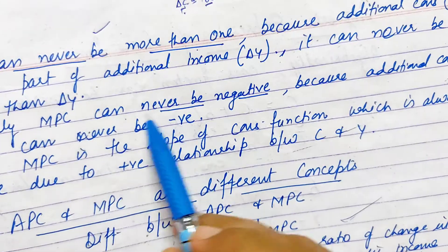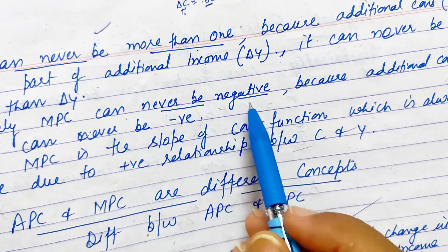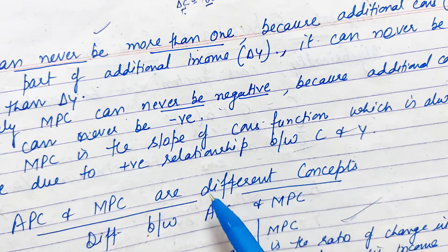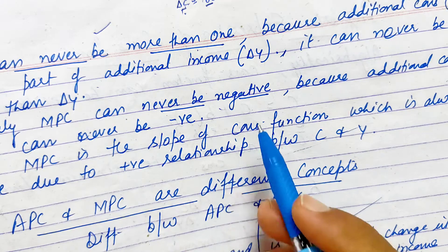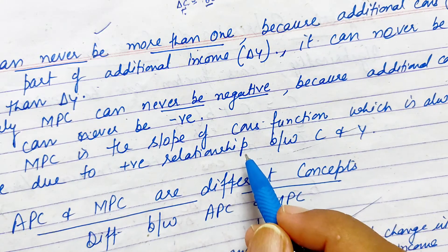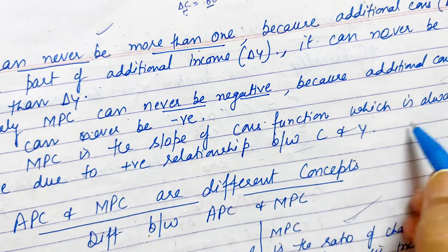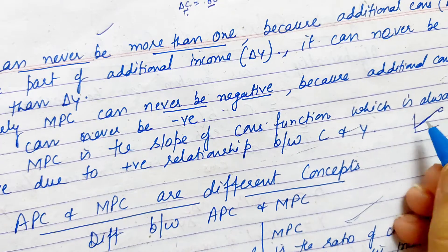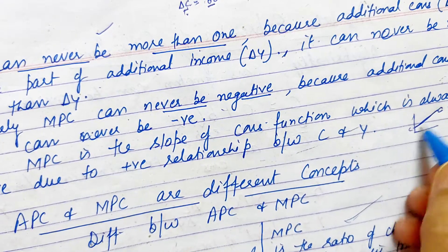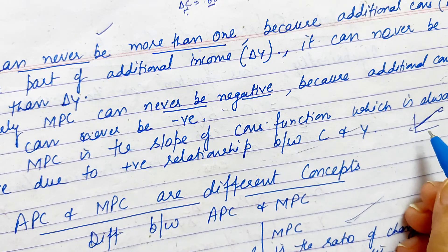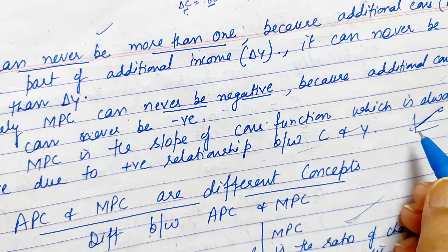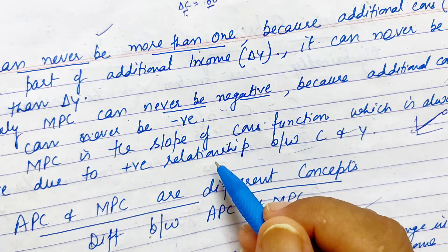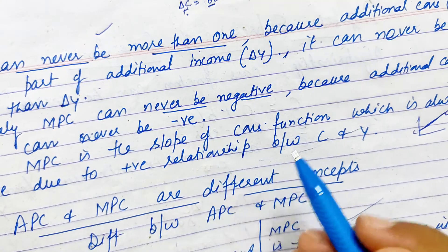Similarly, MPC can never be negative — meaning it cannot be less than zero. Because MPC is the slope of the consumption function, and the slope of the consumption curve is always positive. The consumption curve is upward rising, showing a positive relationship between C and Y. Since the slope is positive, the value of MPC can never be negative.